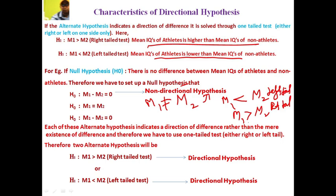Each of these alternate hypotheses indicates the direction of difference rather than the mere existence of difference, and therefore we have to use a one-tailed test, either right or left. This is an example of a directional hypothesis — a left-tailed t-test where M1 is less than M2, or M1 is greater than M2 in the case of a right-tailed t-test.